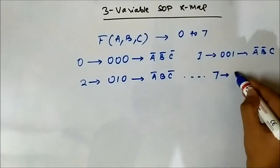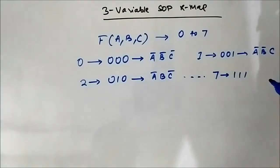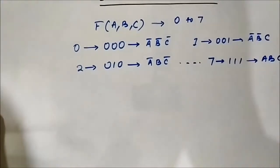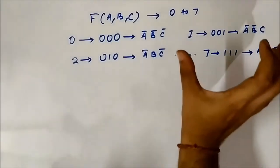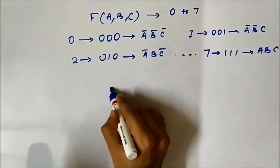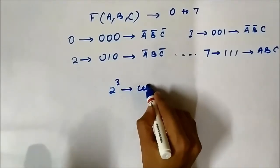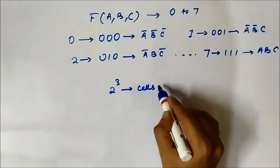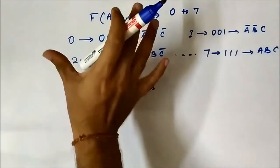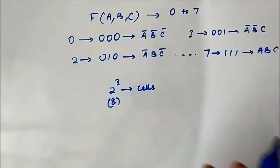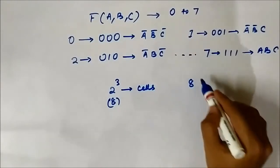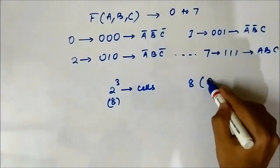The three-variable K-map will consist of 2 to the power 3 number of cells — that is 8 cells — because the total maximum number of Boolean terms that can be formed using three variables is also 8, each representing a particular value from 0 to 7.